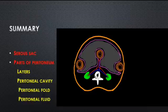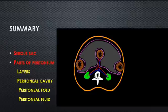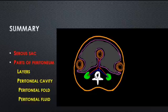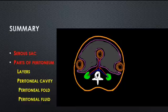To summarize: the peritoneum is a serous sac lined by the serous membrane called the mesothelium, which secretes the peritoneal fluid. The two layers are the parietal peritoneum lining the inner surface of the abdominal wall, and the visceral peritoneum covering the outer aspect of the viscera. The peritoneal cavity is the space between these two layers and contains the peritoneal fluid. The peritoneal fold suspends the intraperitoneal organs, and when connecting organs it may form ligaments.